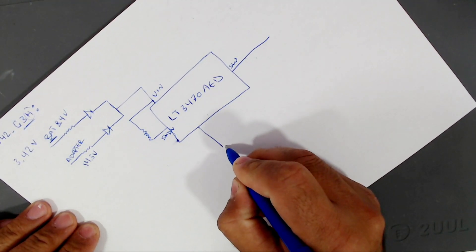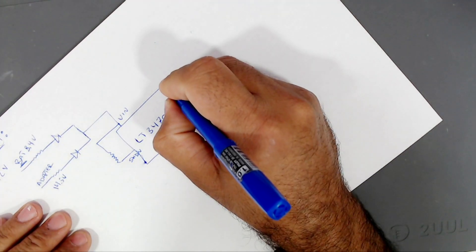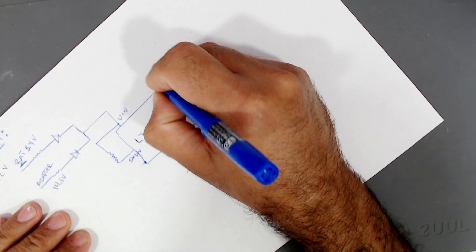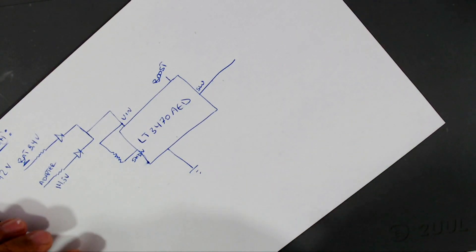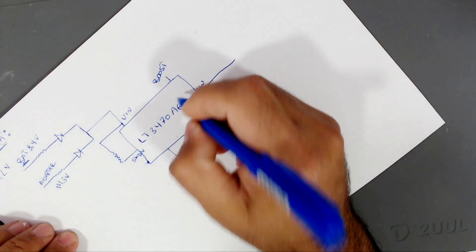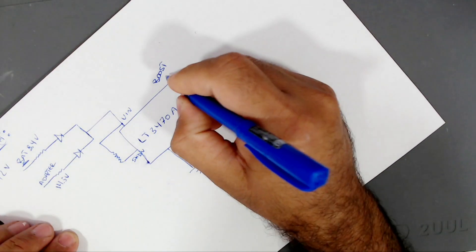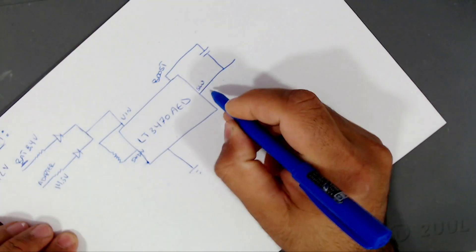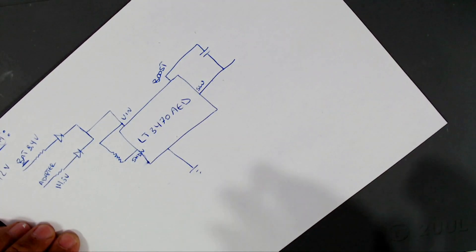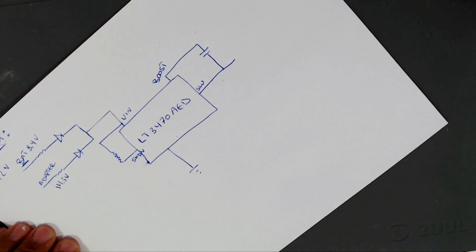We also have a ground pin and we have boost pin. This boost pin is used to boost the output voltage. This is connected to the internal regulator. This pin is connected through a capacitor from the output, from the switch pin, from the output pin. So this one is used to boost the internal regulator, so the regulator will output voltage.